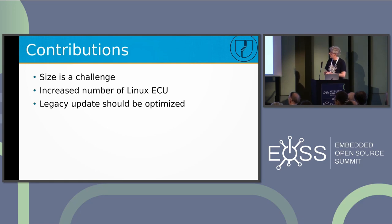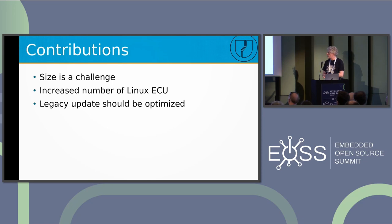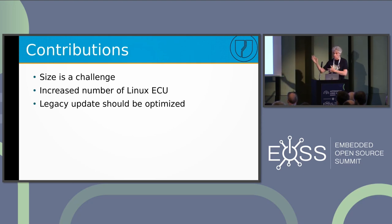To summarize: size is always a challenge because the CAN bus cannot do more. But there's an increasing number of Linux ECUs, so the update process must be done. How it can be optimized depends really on the whole environment. I could not do a lot more, but there are some ways to achieve delta updates. This is also what is done by splitting the application and the OS. Thank you very much.